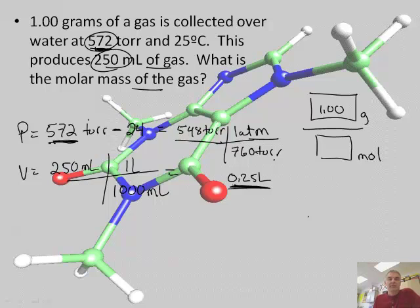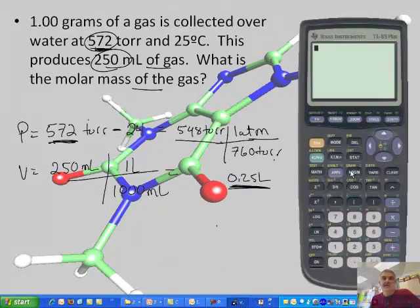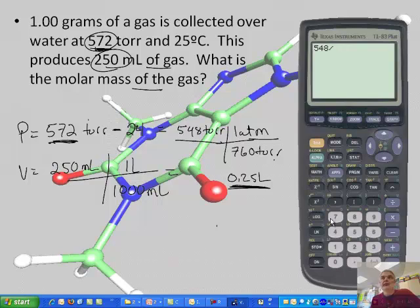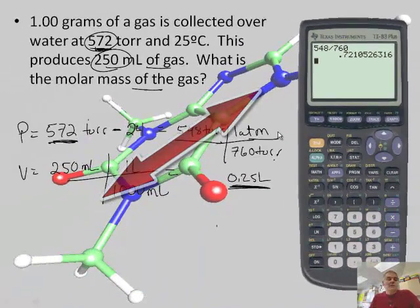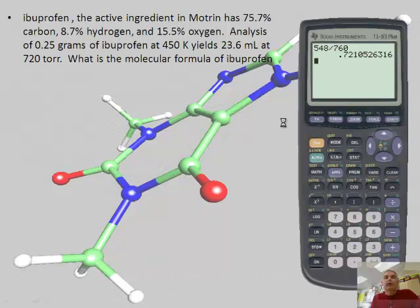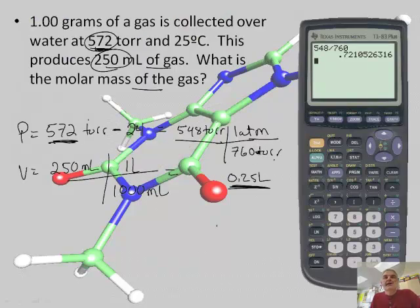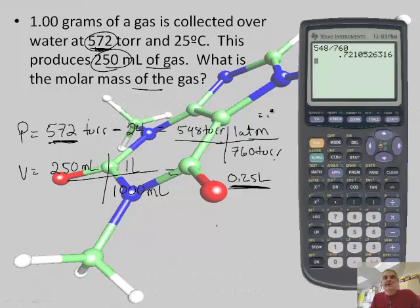And I think that's all I really need to know if I'm just finding the moles. So let me get my trusty calculator out. So let's find the pressure. So I have 548 divided by 760 gives me 0.721. So this is 0.721 atmospheres. All right, that's my pressure.